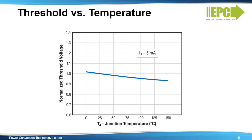In contrast, the threshold voltage of a silicon MOSFET will decline much more rapidly with increasing temperature.